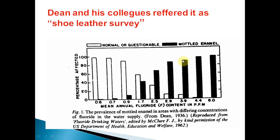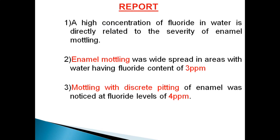A striking feature was observed in the survey results: the blank bars represent normal enamel and the black bars represent mottled enamel. As the ppm of fluoride increased, mottling also increased. At 0.6 ppm there was no mottling; at 0.9 ppm very mild mottling; and at 1.7, 2.5, 2.9, 3.9, and 4.6 ppm, high mottling was seen. The conclusion was that fluoride concentration is directly proportional to mottling of enamel — and higher fluoride concentration was directly related to widespread enamel mottling.